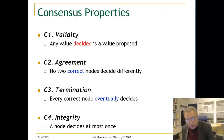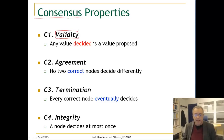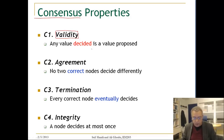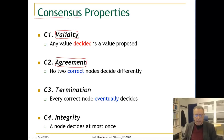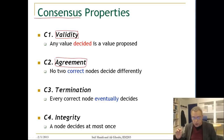The properties of consensus are as follows. The first property is validity: any value decided must be a value that was proposed — we can only decide on a value proposed by one of the nodes in the system. The second property is agreement: no two correct nodes can decide differently.